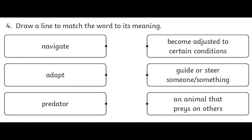Question number 4: Draw a line to match the word to its meaning. Let's read all the words in the column on the left side: navigate, adapt, predator. And now let's read the words in the column on the right: become adjusted to certain conditions; guide or steer someone or something; an animal that preys on others. If you need to, just pause the video, and when you're ready, you can continue.